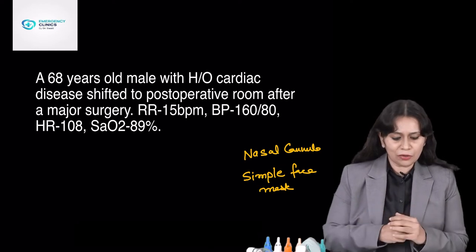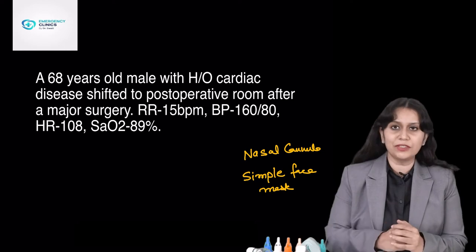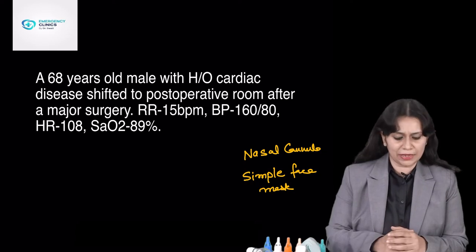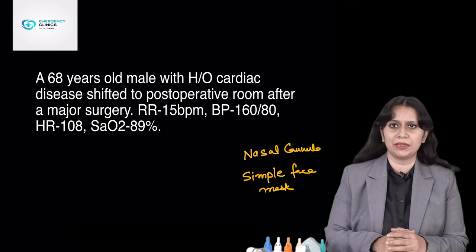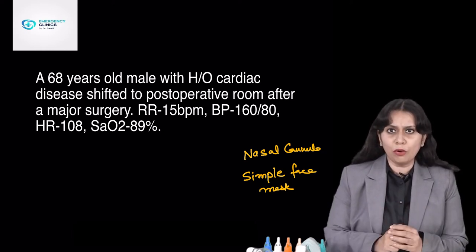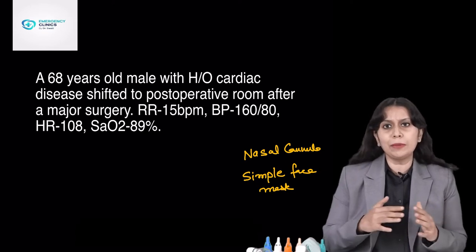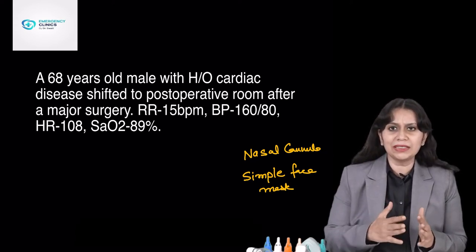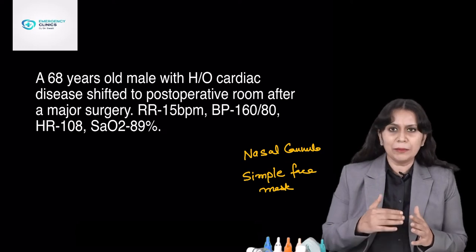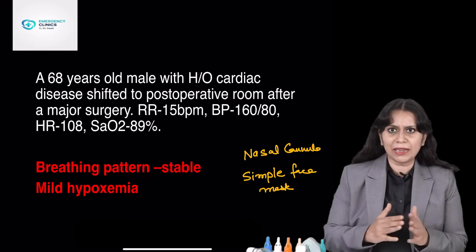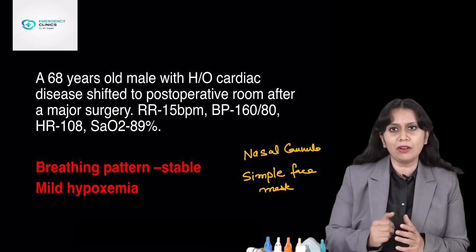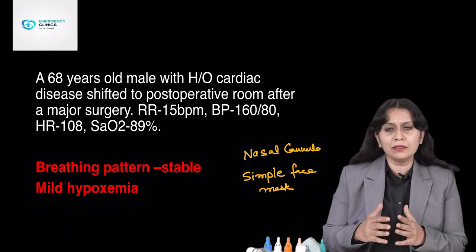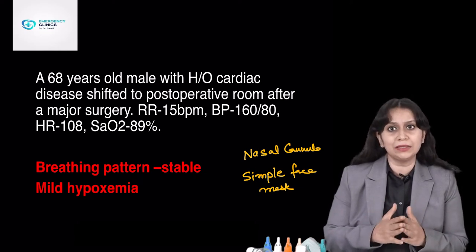First case: a 68-year-old male with history of cardiac disease was shifted to post-op room after major surgery. Respiratory rate was 15 breaths per minute, BP 160/80, heart rate 108 beats per minute, saturation 89%. I would go for a variable performance, low flow device. Why? Because the respiratory rate is 15 breaths per minute, the patient has a stable breathing pattern and is just mildly hypoxemic. So I would choose either nasal cannula or a simple face mask.